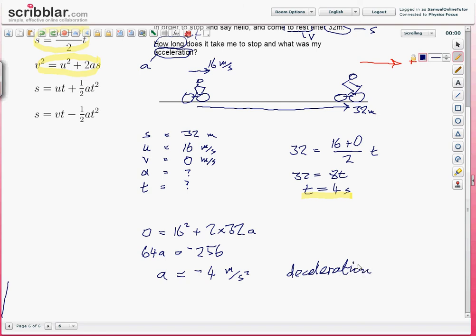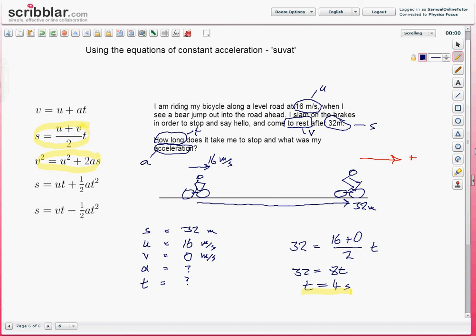So there you go. SUVAT equations are no more complicated than that, at least in one dimension when everything's travelling in one straight line. Set it out, write down SUVAT, work out which of these five values you know, write them down, which of the five do you still have left to find which you've been asked for, choose the appropriate equation, put the numbers in, and the rest is just algebra.